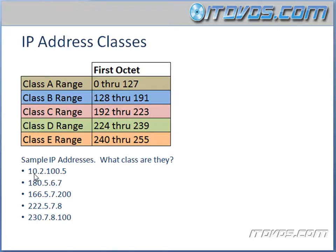We already know this IP address, 10.2.100.5, is a Class A address. What about 180.5.6.7? That's between 128 and 191, so that's a Class B address. 166.5.7.200 — 166 is also a Class B address because it's between 128 and 191.